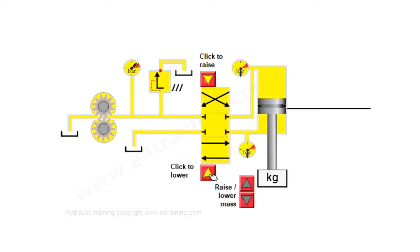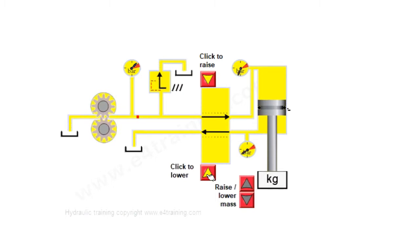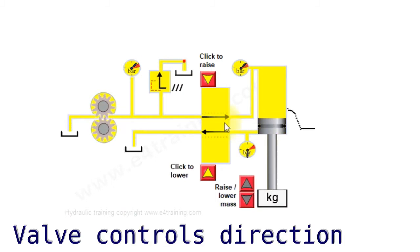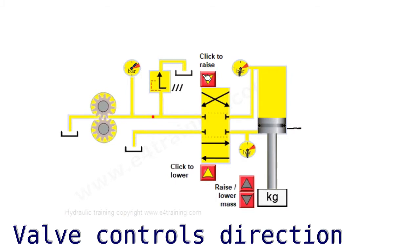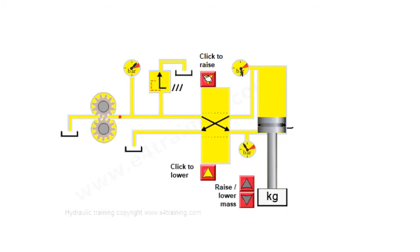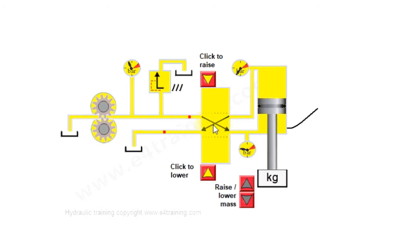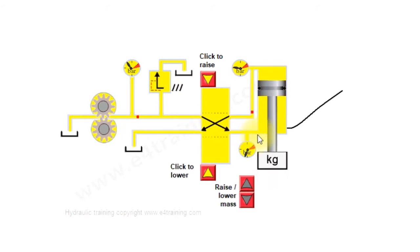With these simulation modules you can actually operate the buttons and see what happens. We can operate it and the cylinder falls down because we're now putting fluid into that side of the cylinder, and it returns back to tank from the annulus side. If we operate it the other way, it comes back to the middle position and then raises because we're now putting flow into the annulus.